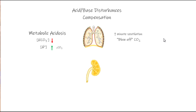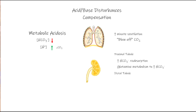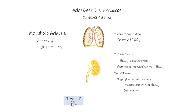Our kidneys can then come along later and help out as well. With an acidosis, in the proximal tubule we're going to increase or maximize our bicarbonate reabsorption or reclamation. We're going to metabolize glutamine to produce new bicarb. In the distal tubule, our type A intercalated cells are going to help produce and retain bicarbonate and secrete hydrogen ions. So with a metabolic acidosis, our lungs help us by blowing off excess acid or CO2, and our kidneys are also going to be able to help us.